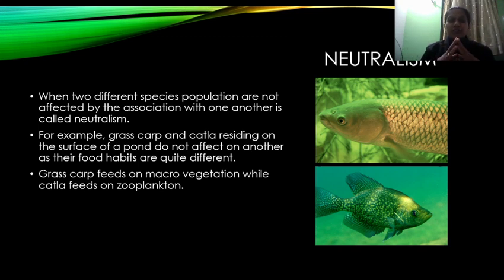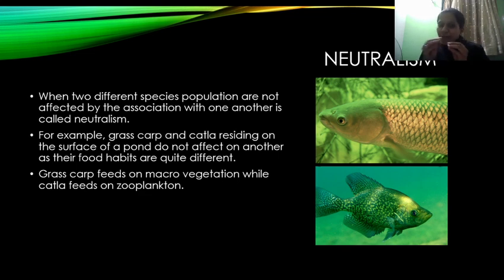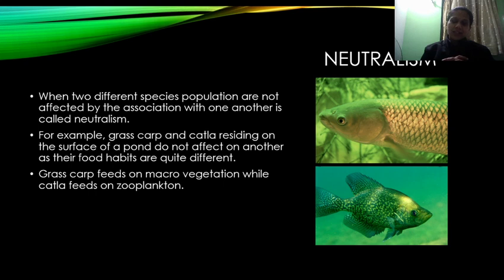इसीलिए ये दोनों बहुत अच्छे से एक ही habitat में आराम से रह सकते हैं। Grass carp plants खाता है, catla zooplankton खाता है — ये same habitat को share करते हैं पर ना ये एक दूसरे को नुकसान पहुँचाते हैं ना एक दूसरे का कोई फायदा करते हैं। So this kind of association is known as neutralism।